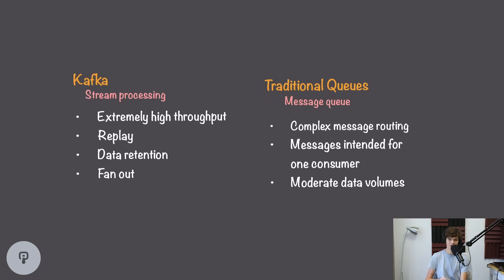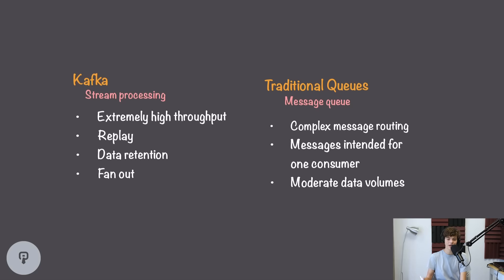Traditional queues, such as RabbitMQ, on the other hand, are designed to be message queuing systems. They're designed to take in messages, queue them until they're ready to be processed, and then send them off to the processor. Traditional queues can handle complex message routing, which is handy if we want to route a specific message based on its properties to specific queues. Traditional queues also generally have a message destined for one consumer — whereas Kafka is fanout, with a traditional message queue, if you have multiple consumers connected to one queue, each message will be routed to exactly one consumer, not every consumer.